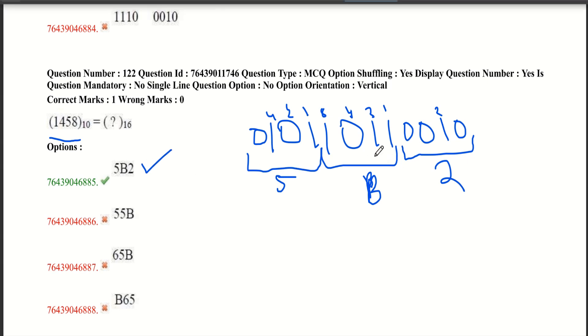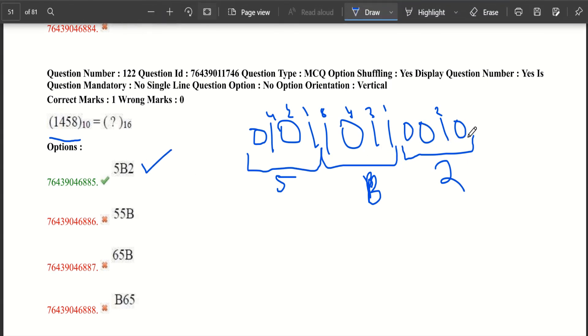And if we want to convert it into octal, we shall use 3 digits. Then you will get octal number.